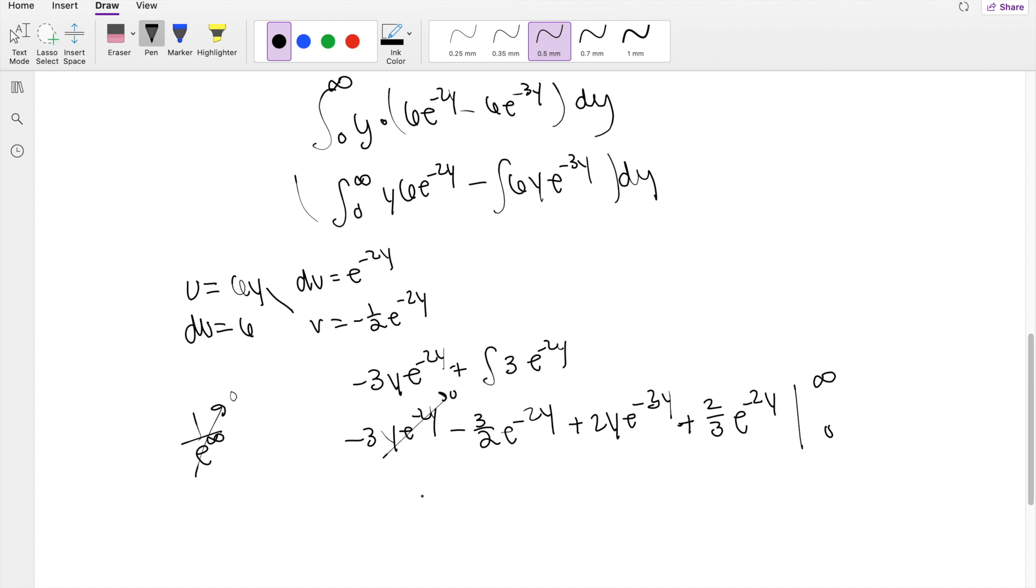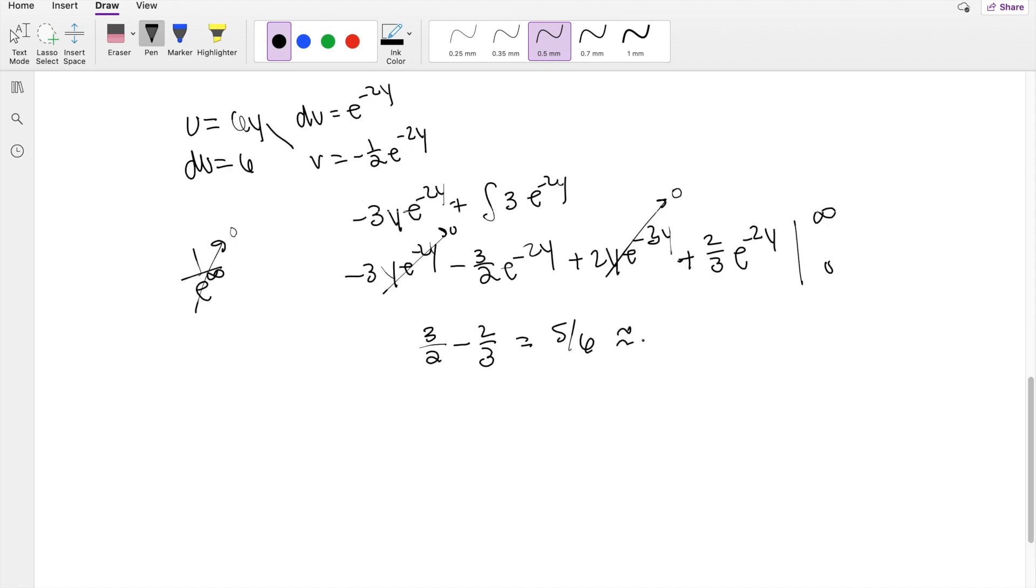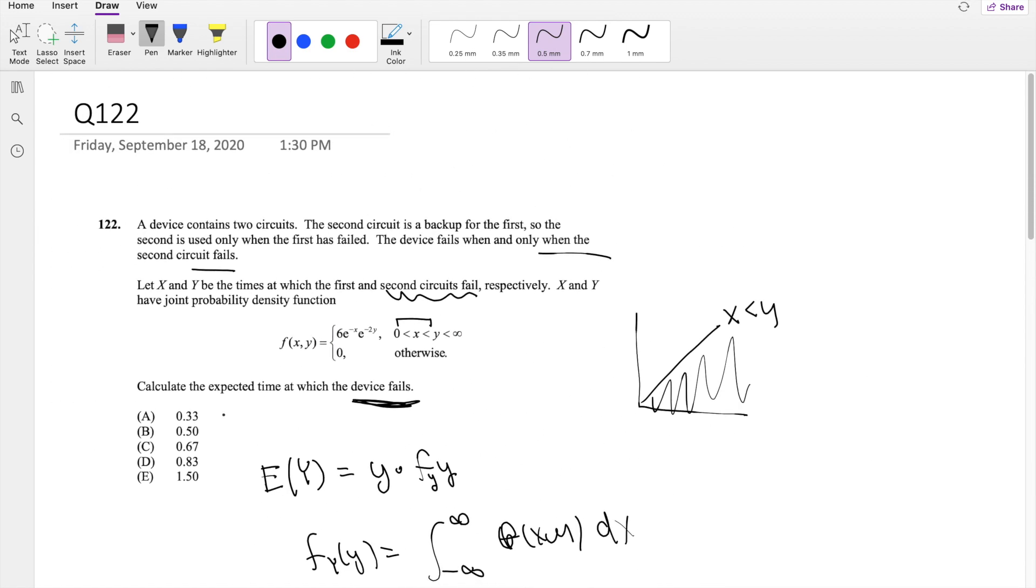This one is going to be positive 3/2 times e^0, which is 1, minus this term which is also 0, minus 2/3. So then this is equal to 5/6, which is approximately equal to 0.833, which is our answer D.